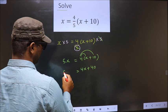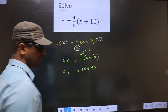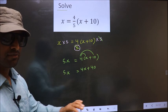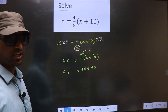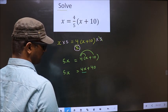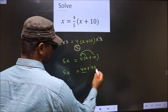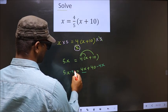And here 5x. Now all the x terms on one side and numbers on another side. What I mean is 4x should not stay on this side, so to remove 4x from here, you subtract 4x on both sides.